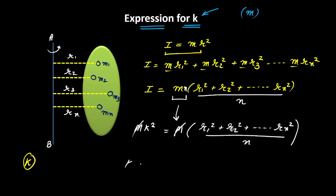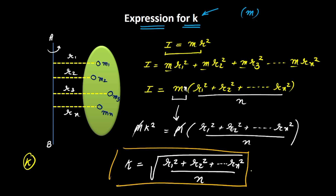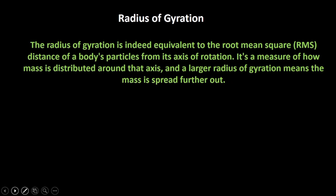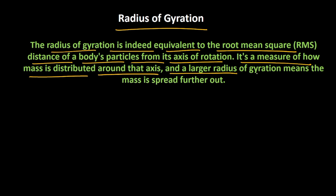So the radius of gyration K equals the square root of (R1² + R2² + ... + Rn²) / N. If you look carefully, this expression is nothing but the root mean square distance. We can therefore redefine radius of gyration as the RMS distance of a body's particles from its axis of rotation. It is a measure of how mass is distributed around that axis — a larger K means the mass is spread further out.